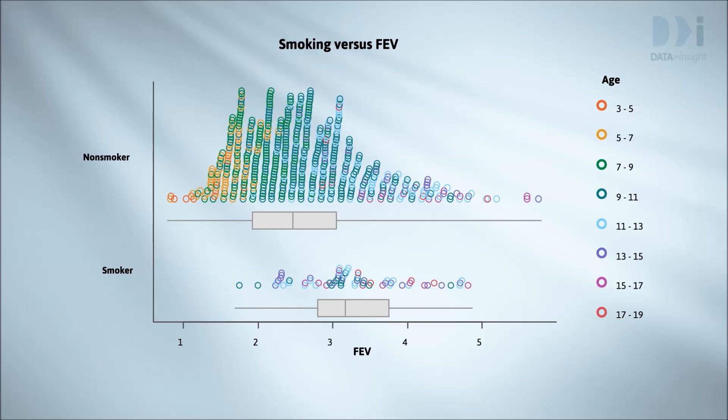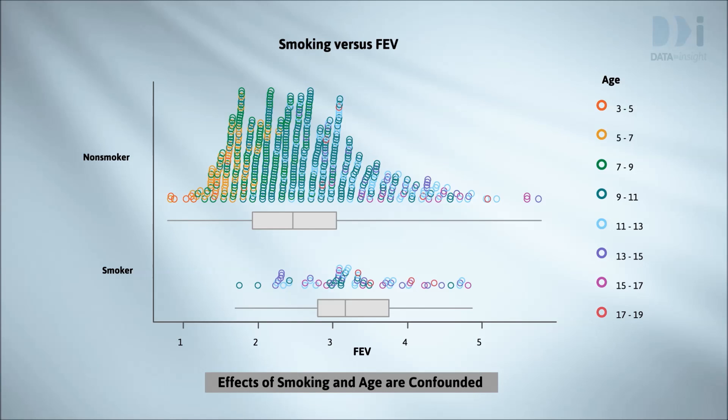Young children have small lungs and can't blow much air. The groups weren't just different on smoking — they were also different on other important factors, most noticeably age. We weren't just comparing the effect of smoking; we were comparing some mixture of the effect of smoking and the effect of age. Both effects were mixed up, or confounded.